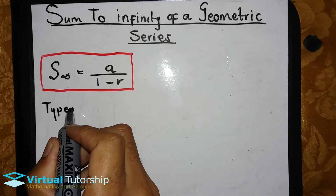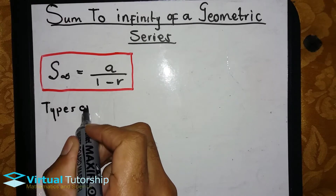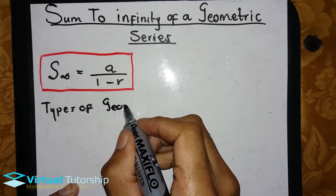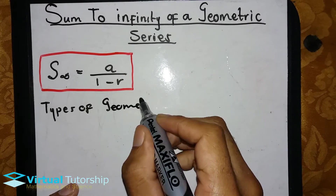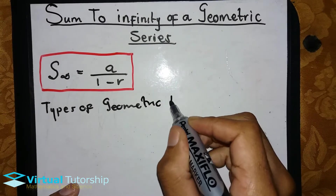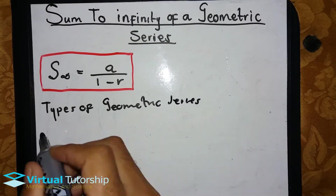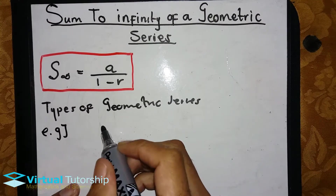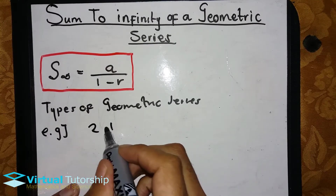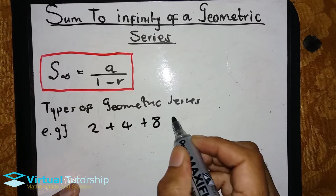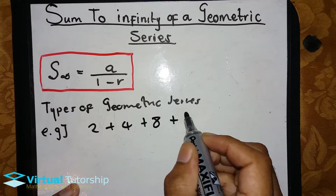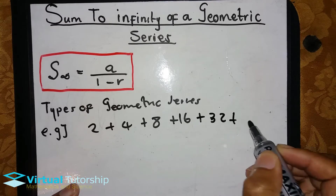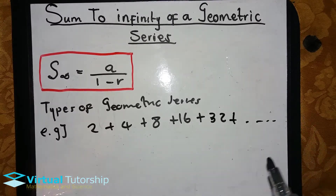There are actually two types of geometric series. For example, we have a pattern of 2, 4, 8, 16, 32, plus up to infinity.